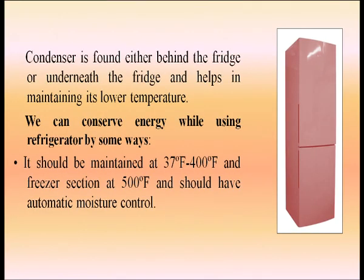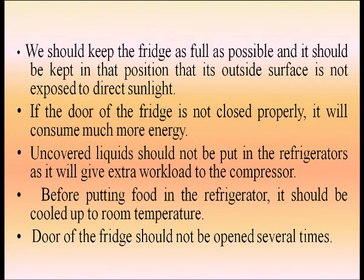First, let us talk about the refrigerator. The condenser, found either behind or underneath the fridge, helps maintain its lower temperature. To conserve energy, the fridge should be maintained at 37°F to 40°F, and the freezer section at 5°F, with automatic moisture control. Keep the fridge as full as possible and away from direct sunlight. If the door is not closed properly, it will consume much more energy. Uncovered liquids should not be put in the refrigerator as they add extra workload to the compressor. Before putting food in the fridge, cool it to room temperature, and do not open the door several times.